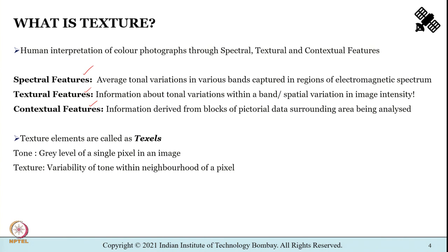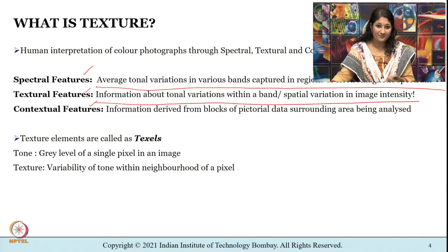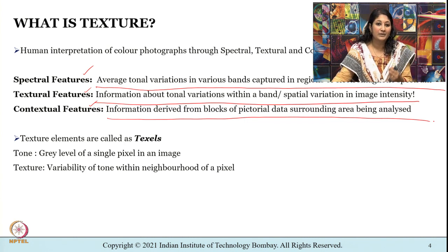When I say spectral features, I am referring to average tonal variations in various bands captured in regions of the electromagnetic spectrum. We can define textural features as information about tonal variations within a band, or information about spatial variation in image intensity — how image intensity values vary with respect to space, in the x or y direction. When I say contextual features, I am referring to information derived from blocks of pictorial data surrounding the area being analyzed.